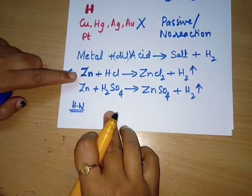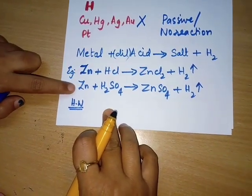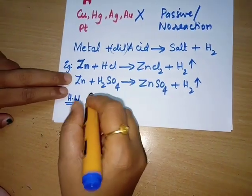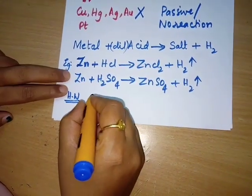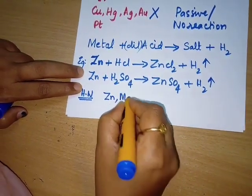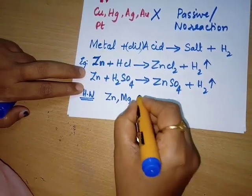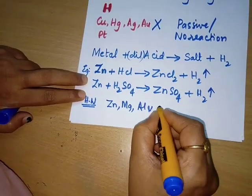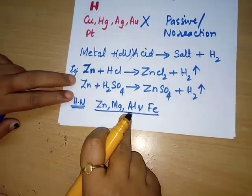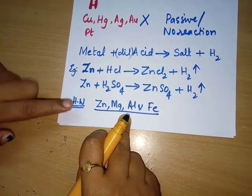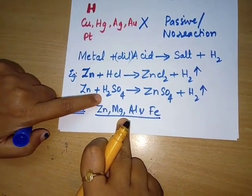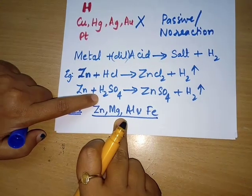Today's homework is to write balanced chemical equations for the reaction of four metals — zinc, magnesium, aluminium, and iron — with dilute hydrochloric acid and dilute sulfuric acid.